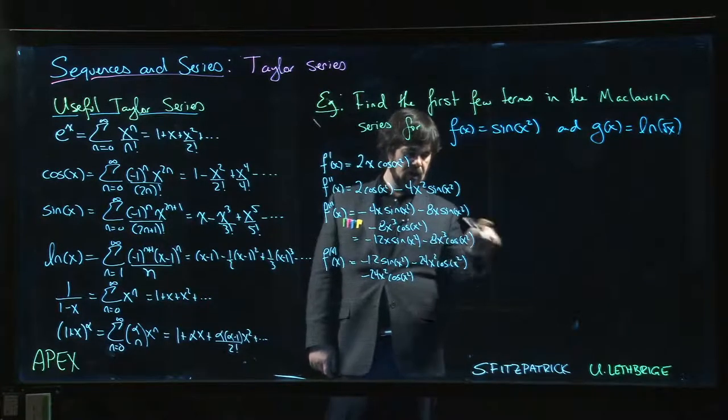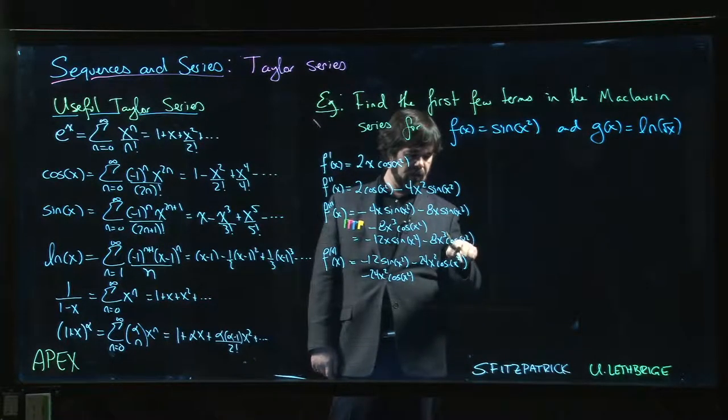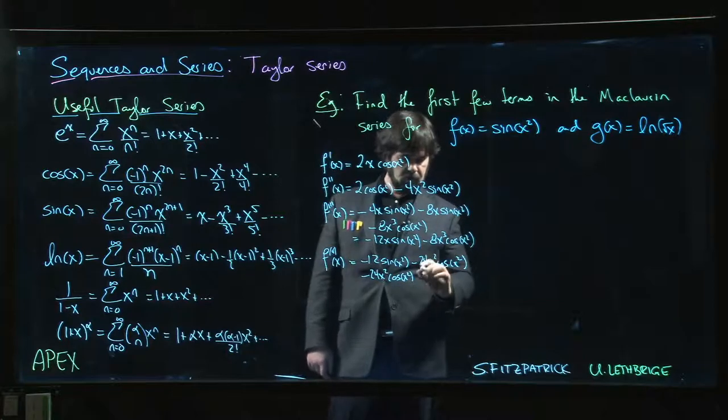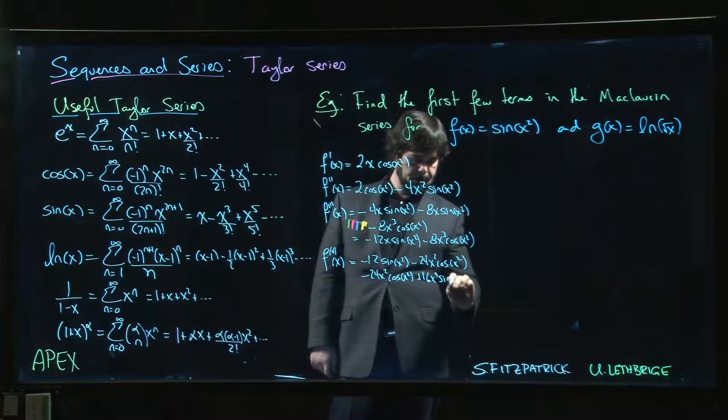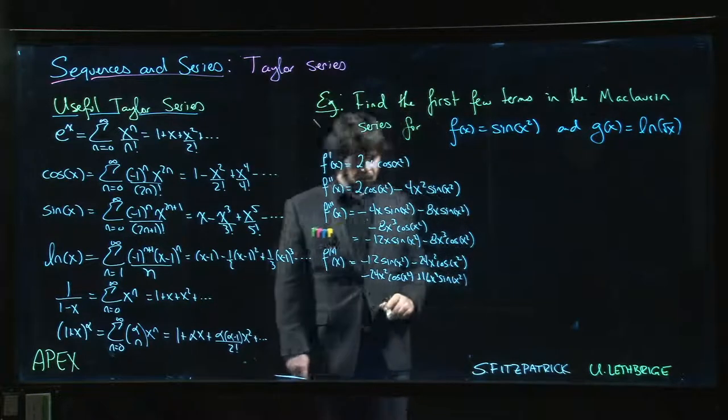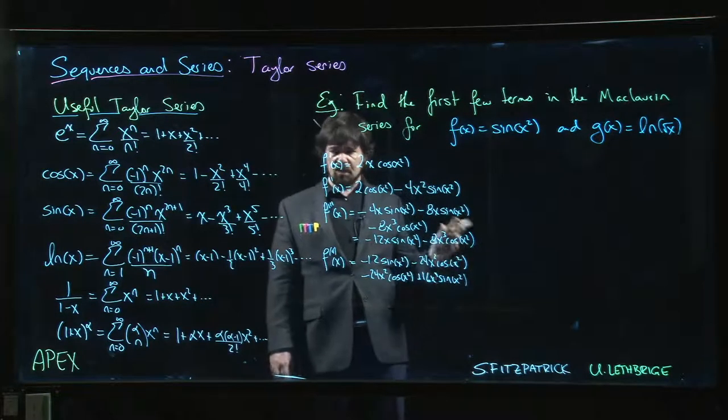24x² cos(x²), taking the derivative here. Then finally taking the derivative of that we get negative sin(x²) times another 2x, we get minus 16x⁴ sin(x²).